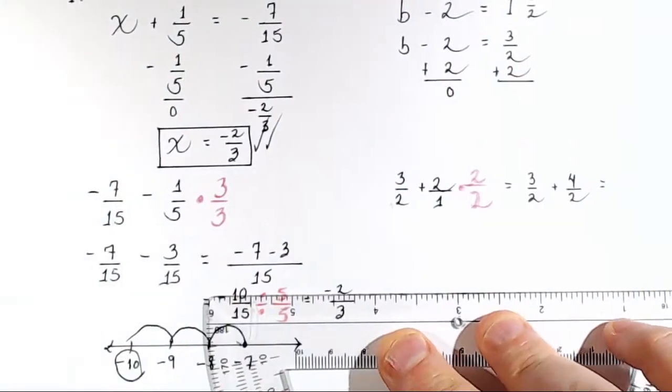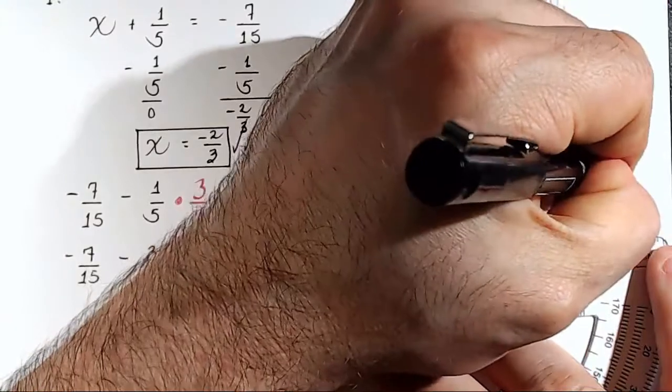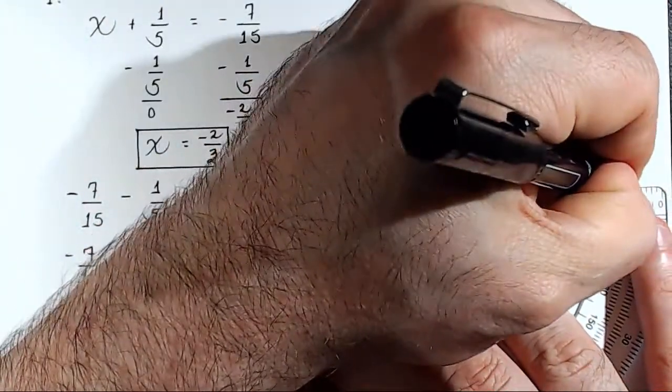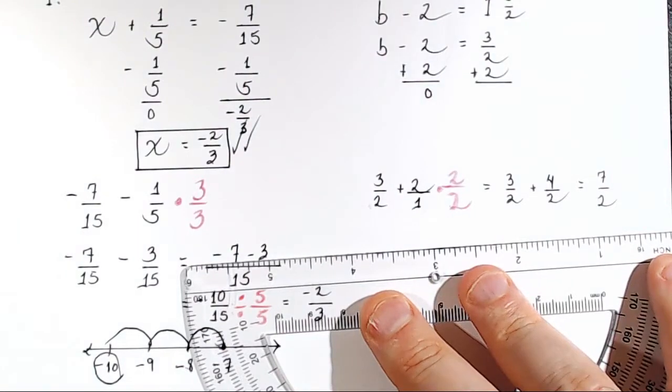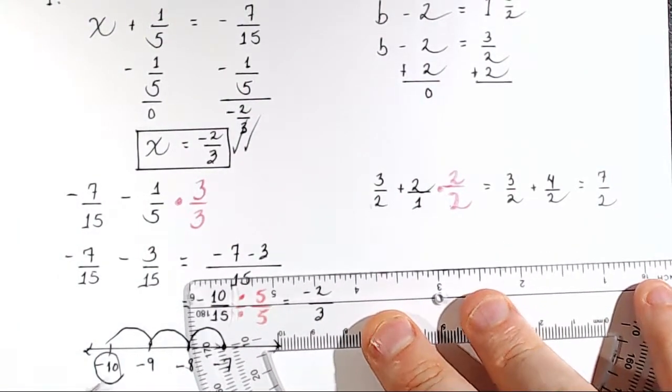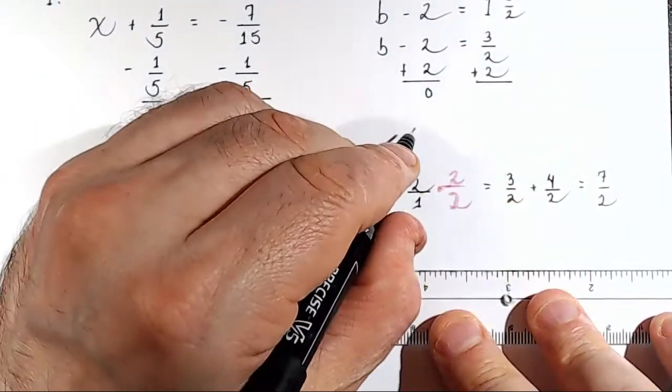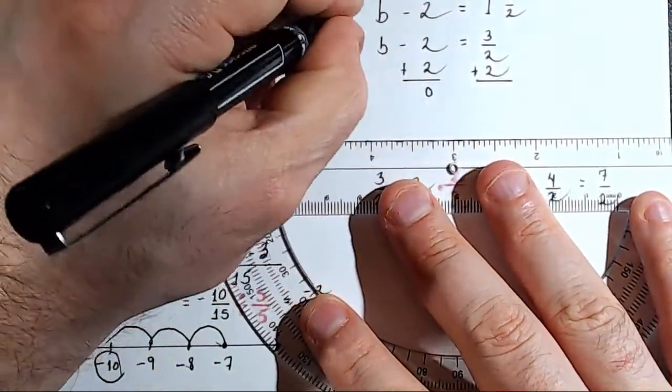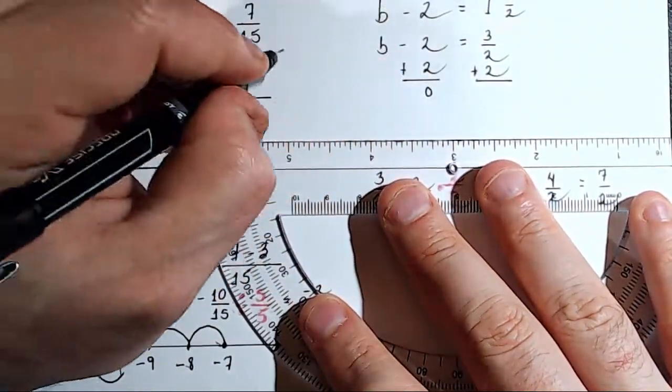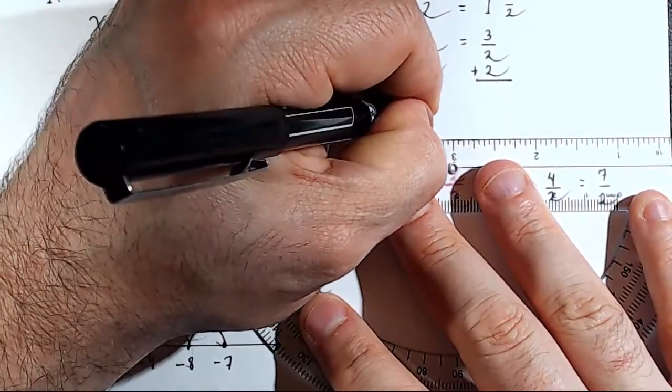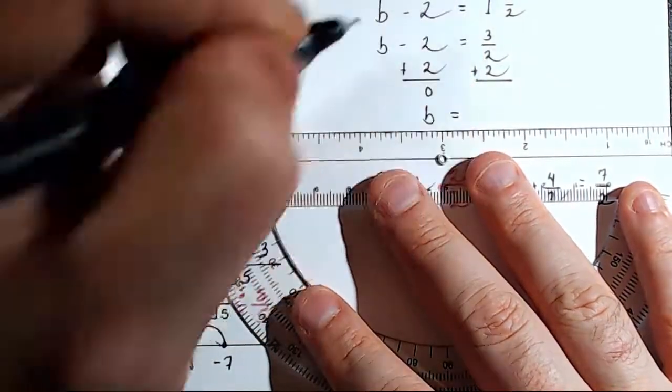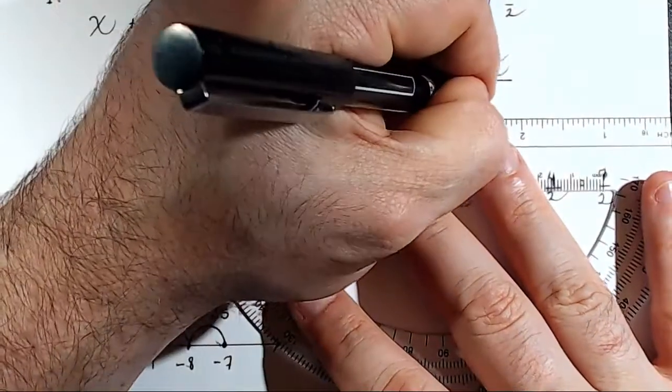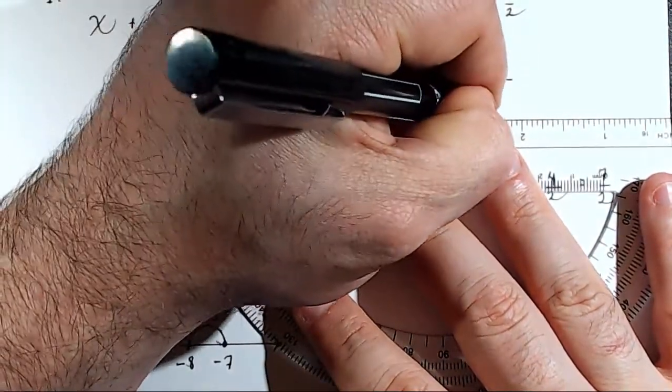So now I have 3 over 2 plus 4 over 2. You add the numerators. 3 plus 4 is 7. You have 7 over 2. So that is the answer. So let's go back up here and write B equals 7 over 2.